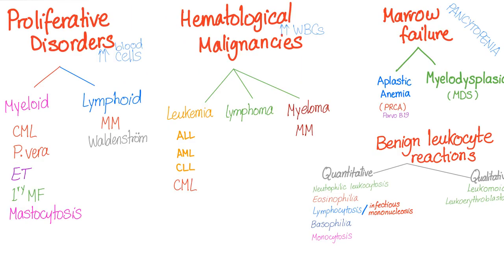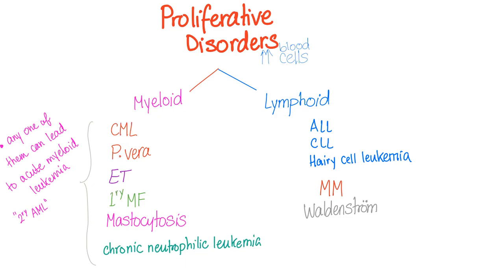Except for anemia, all of hematology is condensed in this slide. We have proliferative disorders, hematological malignancies, marrow failure, and benign leukocyte reactions. Myeloproliferative disorders are six: chronic myelogenous leukemia, polycythemia vera, essential thrombocytemia, primary myelofibrosis, mastocytosis, and chronic neutrophilic leukemia. Any one of these can lead to acute myeloid leukemia, which we call secondary AML, in contrast with primary idiopathic AML.